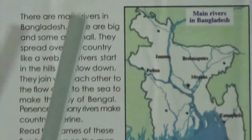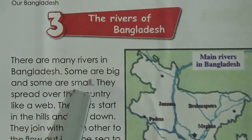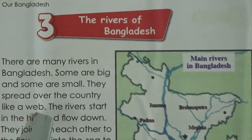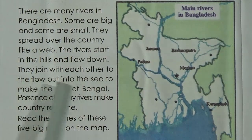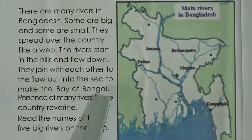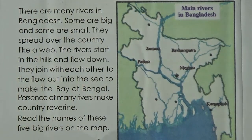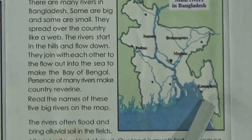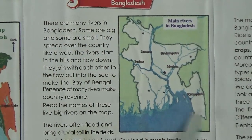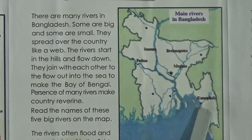Now Lesson 3: the rivers of Bangladesh. There are many rivers in Bangladesh — some are big and some are small. They spread over the country like a wave. The rivers start in the hills and flow down, joining each other to flow out into the sea to make the Bay of Bengal. The five big rivers are: Jamuna, Padma, Brahmaputra, Meghna, and Karnaphuli.